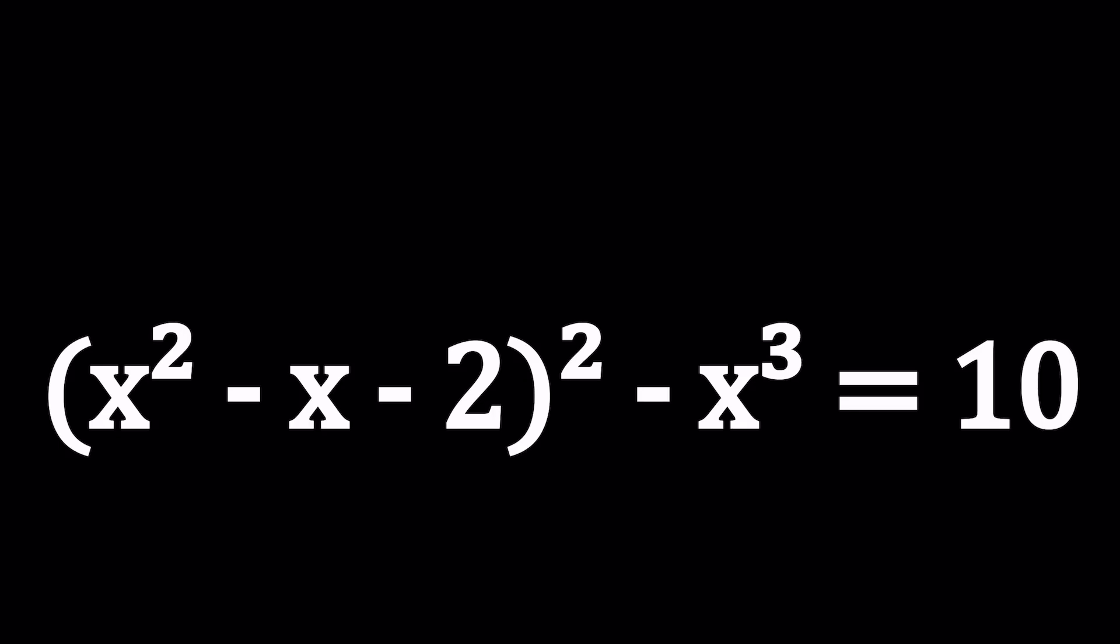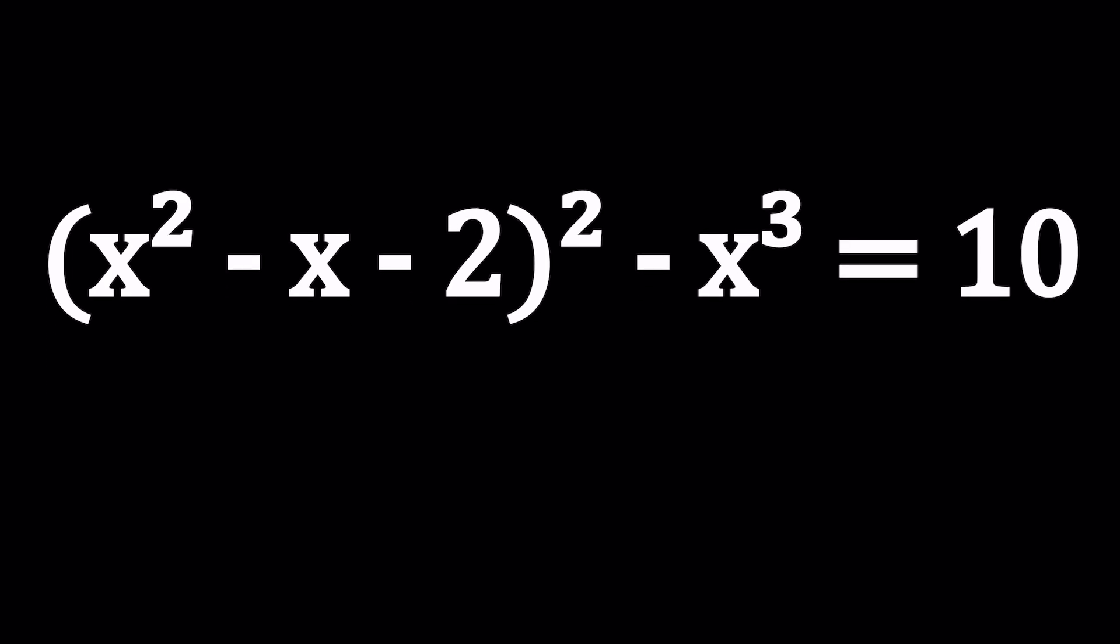Hello everyone. In this video, we're going to be solving a polynomial equation. We have x squared minus x minus 2, quantity squared, minus x cubed equals 10. And we're going to be solving for x values. Let's see how we can solve this problem, how we can look at it from different angles.